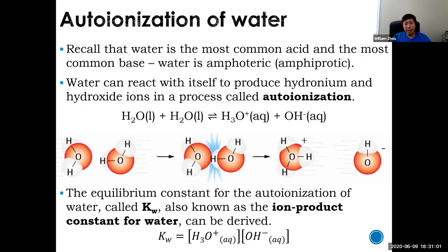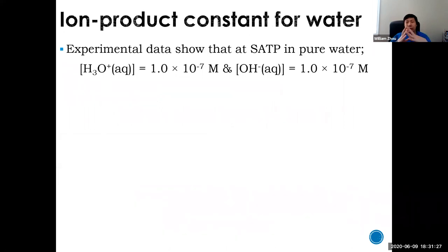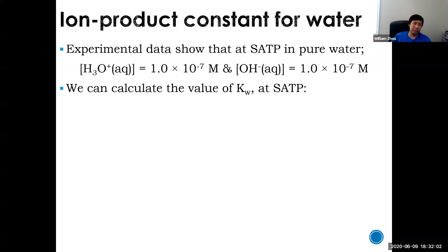In water, the concentration of hydronium and hydroxide are always equal, because when you have two water molecules bump into each other, they make one hydroxide and one hydronium — exactly in that ratio. As a result, because H₃O⁺ and OH⁻ are equal, water is neutral. Experimentally, at SATP — 25°C and 100 kPa — the concentration of hydroxide in pure water is 1.0×10⁻⁷ mol/L, and H₃O⁺ equals OH⁻ equals 1.0×10⁻⁷ mol/L. You can use that to calculate Kw at SATP.